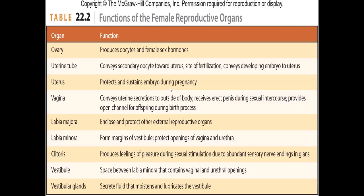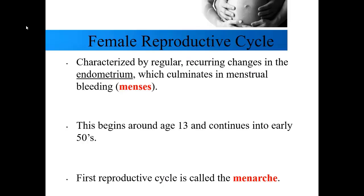Here we have a table listing all the female reproductive organs — both the gonads and accessory structures — along with their names and main functions, similar to the male summary slide. If you'd like to make flashcards, this is a good slide to reference. The last part of this chapter is the female reproductive cycle, which is characterized by regular recurring changes within the endometrium that culminate in menstrual bleeding or menses — the term menses referring to the blood itself.